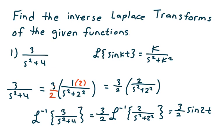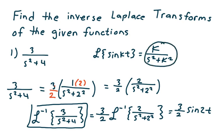So what I want to do is take the inverse Laplace transform of 3 over s squared plus 4, and I claim that's equal to 3 halves times the inverse Laplace transform of 2 over s squared plus 2 squared. Notice k equals 2, so it takes on that standard form. When I take the inverse Laplace transform of 2 over s squared plus 2 squared, I get sine of 2t. So the answer is 3 halves sine of 2t. That's how example 1 works.